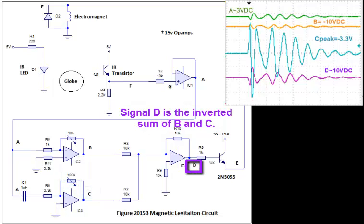Signal D is the inverted sum of B and C.